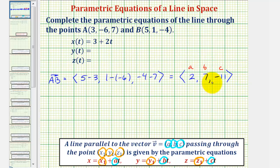Now to find the parametric equations, normally it doesn't matter which point we use, but notice they did give us the first equation for x(t). We're given x(t) = 3 + 2t.